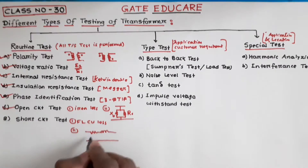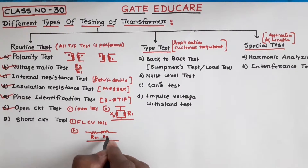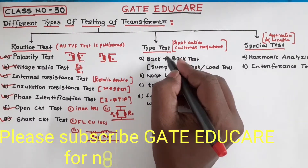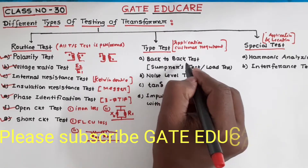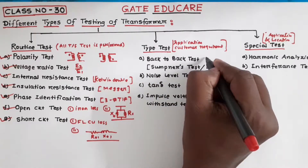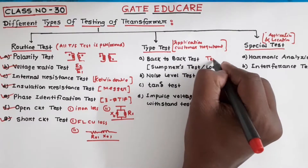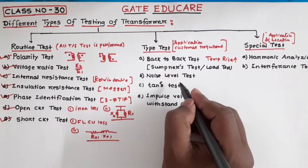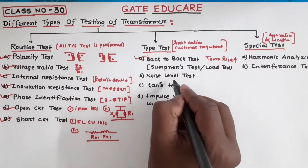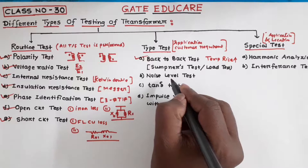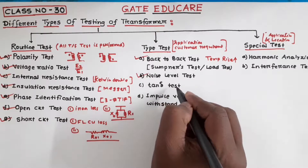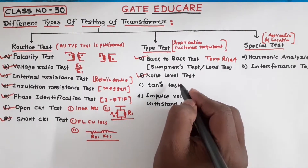Short circuit test: with the help of the short circuit test, generally full load copper loss and series branch parameters R01 and X01 are determined. Next, we will see the type test. The first type test is the back-to-back test. With the help of the back-to-back test, we determine the temperature rise of the transformer. Noise level test: with the help of the noise level test, the noise of the transformer is determined.